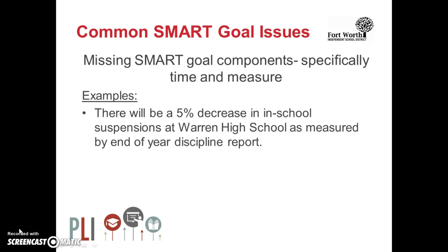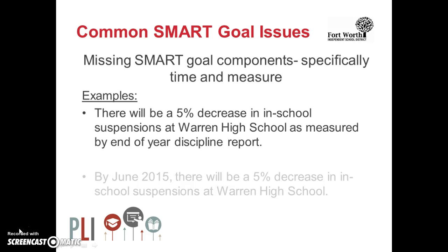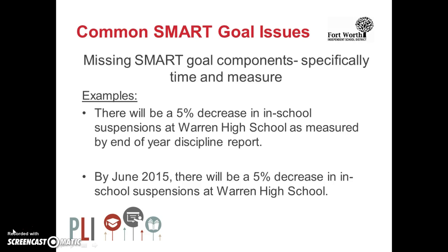The examples on the screen are missing critical components: time and measure. The first example reads: 'There will be a 5% decrease in in-school suspensions at Warren High School as measured by the end-of-year discipline report.' This example does not specify a time when it will be accomplished. In the second example: 'By June 2015, there will be a 5% decrease in in-school suspensions at Warren High School.' This example does not specify a measure for the goal.